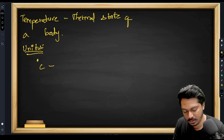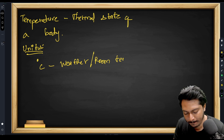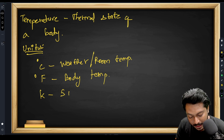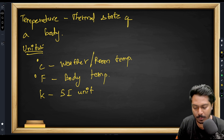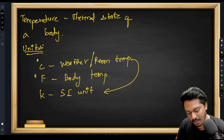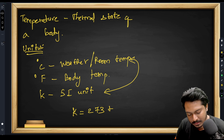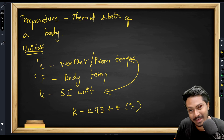There are multiple units of temperature. Degree Celsius is most commonly used for weather reports and room temperature. Degree Fahrenheit is used for body temperature. Kelvin is the SI unit of temperature used for all universal measurements and scientific observations. The temperature in Kelvin is equal to 273 plus the temperature in degree Celsius. So zero degree Celsius equals 273 Kelvin.